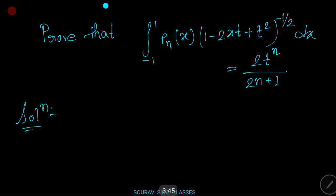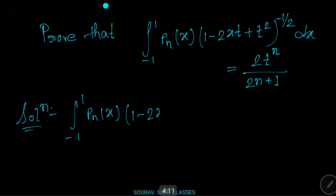Here is an example. Prove that the integration from minus one to plus one of Pn(x) times (1 minus 2xt plus t squared) to the power of minus one half dx equals 2t to the power n divided by (2n plus 1), where n is a positive integer.